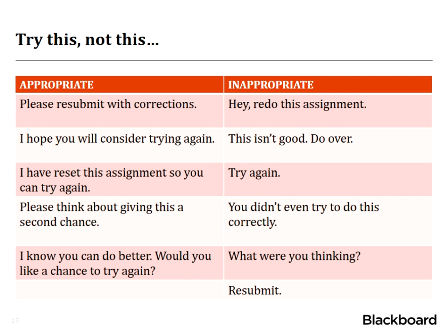Think about these appropriate responses versus the inappropriate ones. Even something as simple as 'try again' — can we instead say 'I've reset this assignment so you can try again'? Or instead of just 'resubmit,' is there something else we can say? A student may not know what they've done wrong. Phrases like 'what were you thinking?' or 'you didn't even try to do this correctly' feel like an attitude. We don't know if they did try. So we want to be positive, think about appropriateness, and lengthen our responses a little so they seem nicer. It's really the golden rule: treat them as we would want to be treated. Also, use proper grammar and punctuation, don't use all caps — that comes across as yelling — and be careful not to overuse exclamation points.